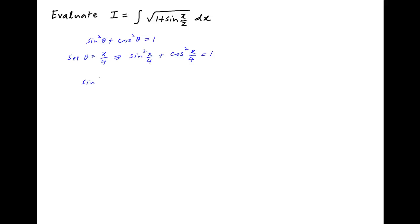We also recall that sin(2θ) = 2sin(θ)cos(θ). Therefore, sin(x/2) can be written as 2sin(x/4)cos(x/4). Using these results,